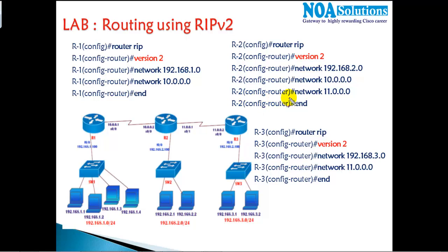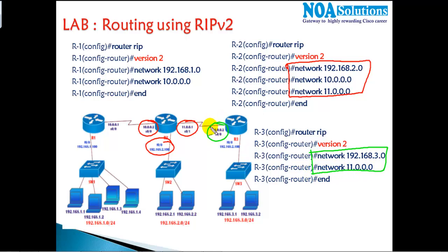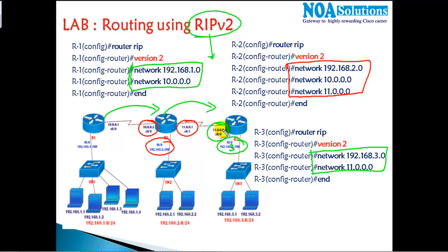On Router 2 we do the same thing — advertise directly connected interfaces. Router 2 has a 10.0 network, 11.0 network, and 192.168.2.0 network. Similarly on Router 3, advertise the 11.0 network and 192.168.3.0 network. When using any dynamic routing protocol — RIP, EIGRP, or OSPF — you just advertise your own interfaces and the routers automatically learn about each other.